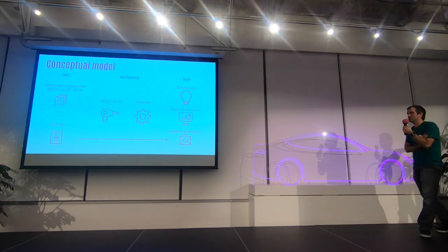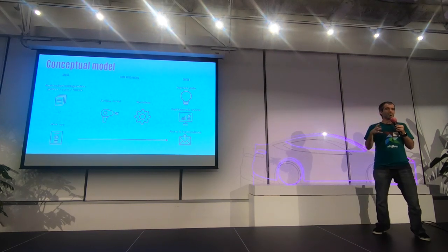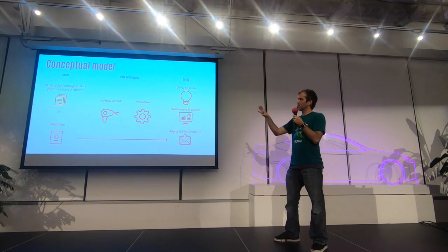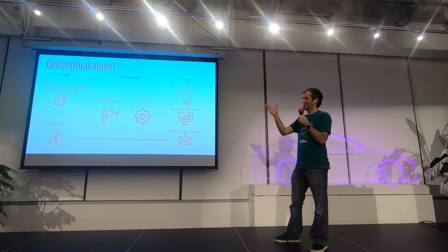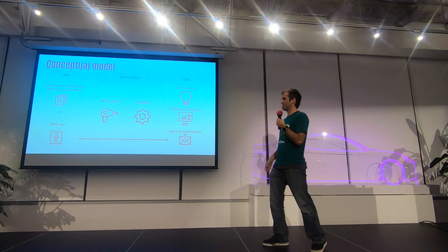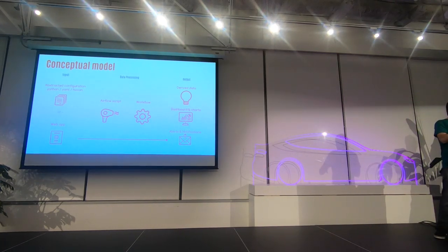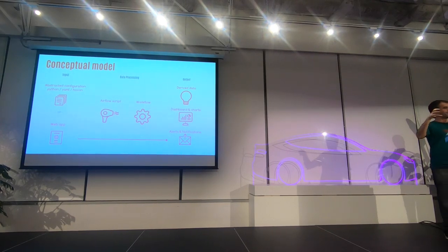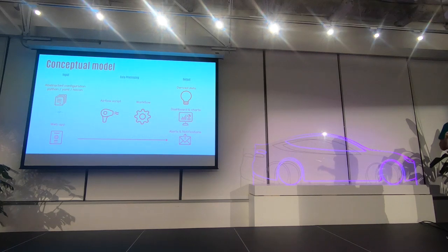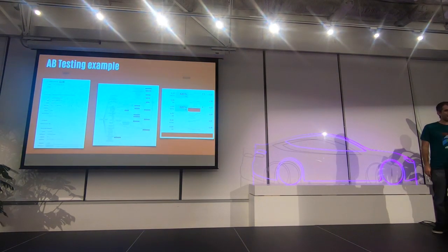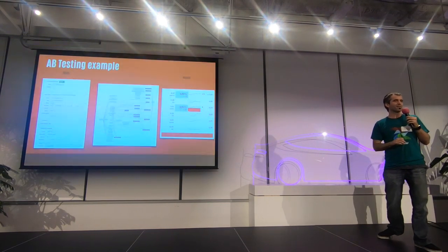The conceptual model: the high-level pattern is that you'd have some sort of abstracted configuration — either Python configuration as code, YAML, HCon, or input that can come through a web app. Then you'd have some sort of Airflow script that reads that configuration and dynamically builds a pipeline or workflow. This workflow, as it's executed, can produce summarized derived data, dashboards and charts, and can alert people and send notifications. One example that a lot of people at web companies will relate to is an A/B testing framework.